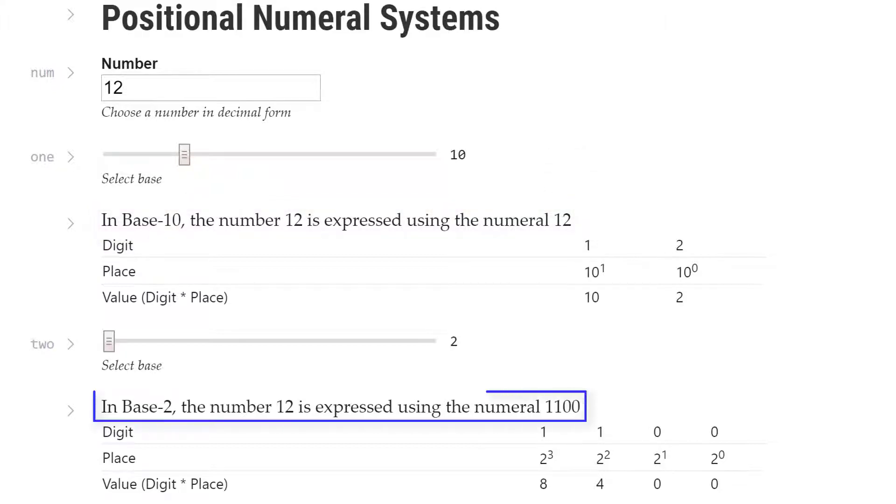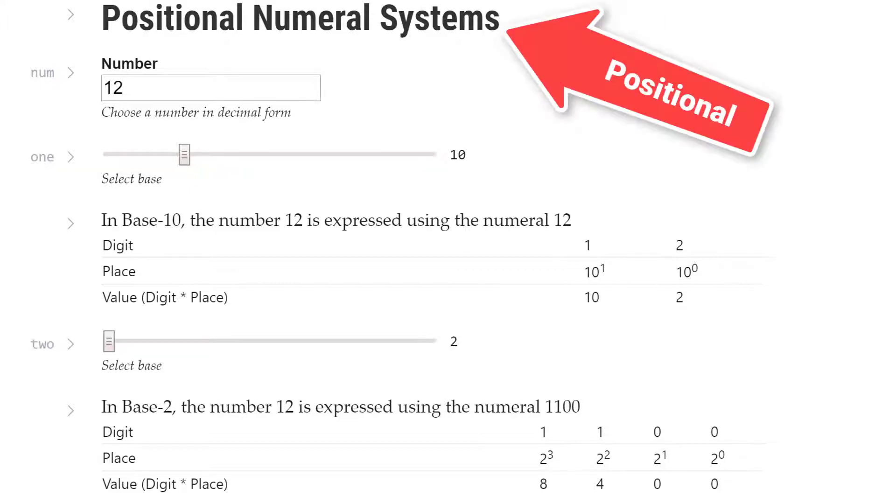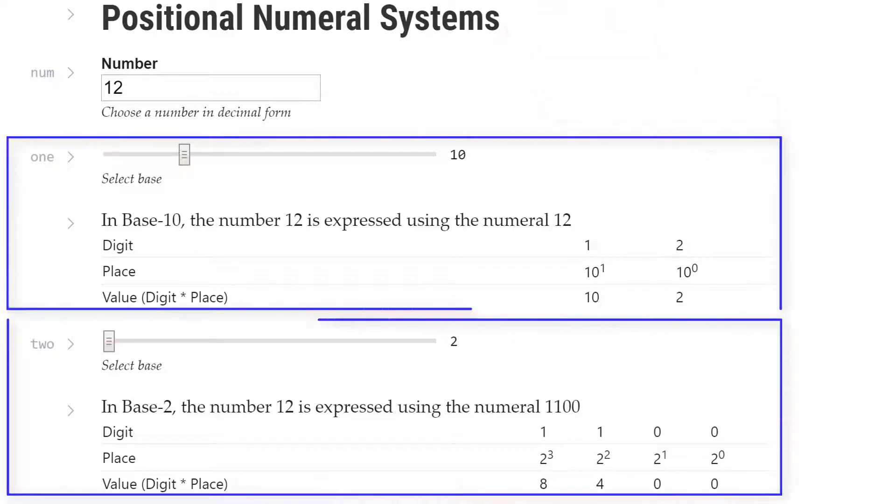For the base 2 table though, the text tells us that in base 2, the number 12 is expressed using the numeral 1, 1, 0, 0. When we are reading numerals, it's important that we do it digit by digit. And this is because in different bases, the digits have different meanings. The position of each digit in the numeral determines the value each digit represents. This is why these numeral systems are called positional numeral systems.